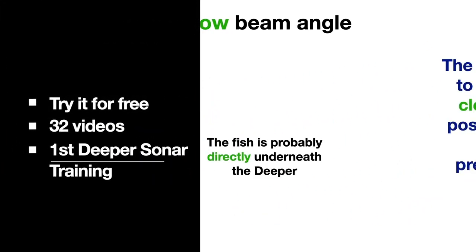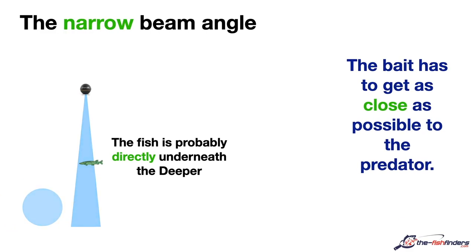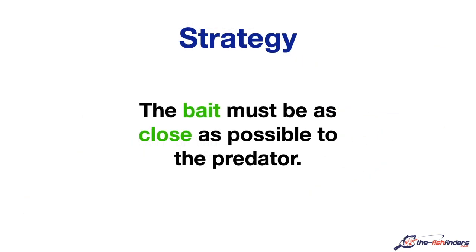We have the following advantage with the narrow beam: if we see a fish with this narrow setting, then it is more likely for it to be somewhere near the Deeper, and we can cast directly at the predator. When we see an arch, we can easily estimate the distance because of the close range, which in turn reduces our number of casts. With the wide beam, we can cover a larger area and see more fish, which we would simply miss with the narrow beam. On the other hand, we can relatively well assess that the fish is near the Deeper with the narrow beam.